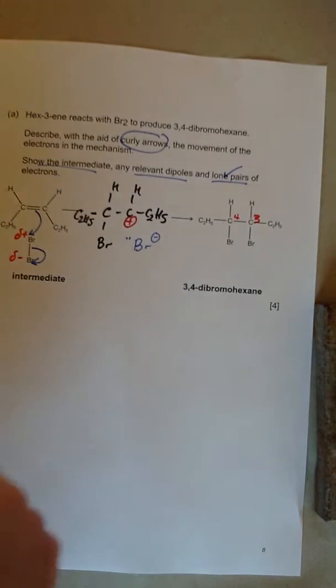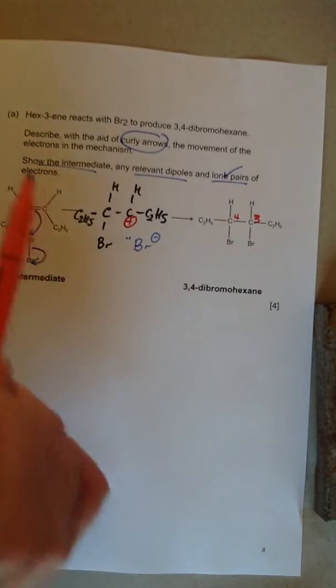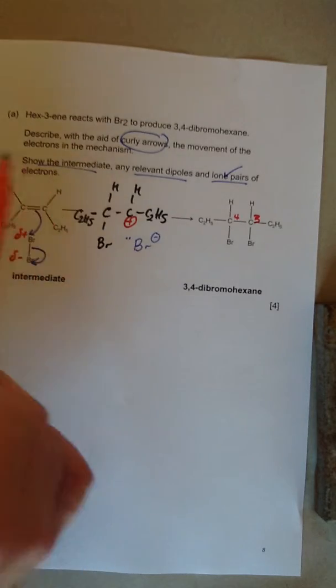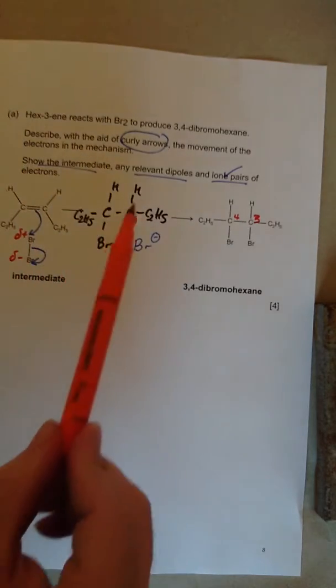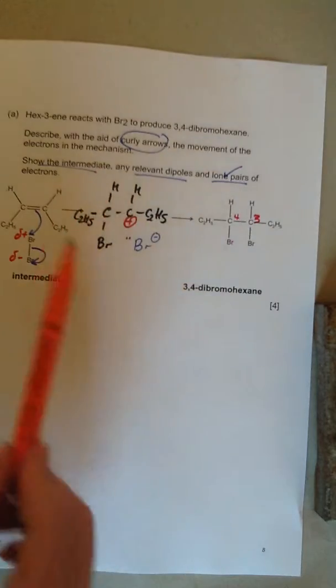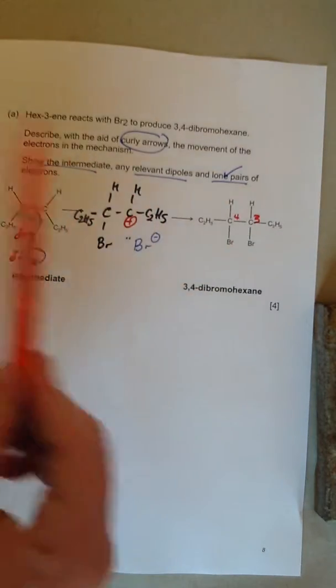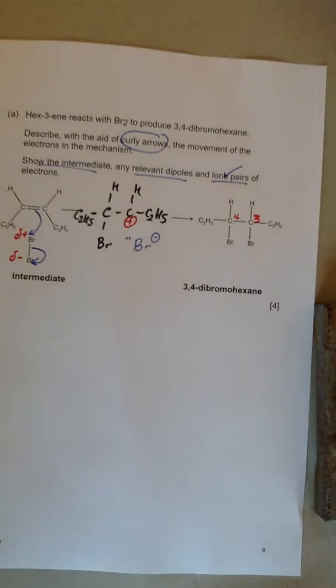Over here on the left hand side, there are no charges in that molecule. There are no full positives or negatives. Over here, the overall stuff in the reaction is going to be neutrally charged. There's a positive and negative. So we haven't lost any electrons.